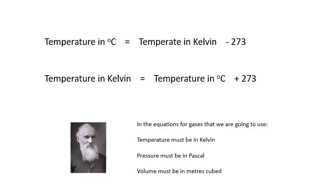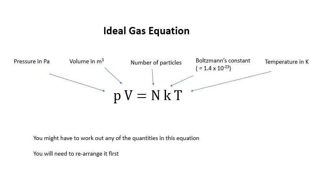You might be given temperature in degrees centigrade; to get to Kelvin you add 273. In the gas equations, temperature must be in Kelvin, pressure must be in Pascals, and volume must be in cubic meters. The equation you need to know is the ideal gas equation: pV = NkT. You'll be given it on a formula sheet in the exam.